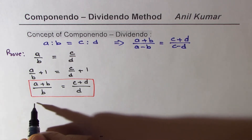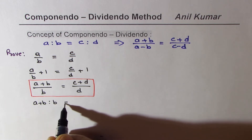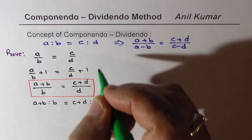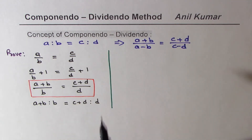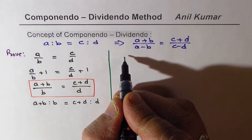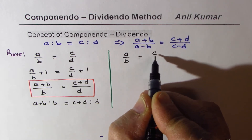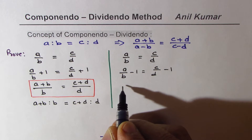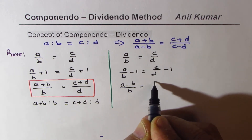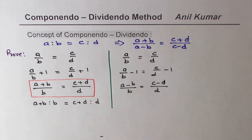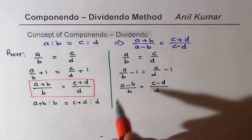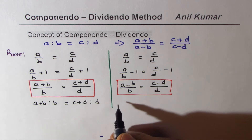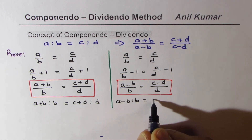That is to say, A plus B is to B is equal to C plus D is to D. So that is one rule which we have learned. Now let us see what happens when we subtract 1. If A over B equals to C over D, then subtracting 1 from both sides gives A minus B over B equals to C minus D over D. So A minus B is to B is also equal to C minus D is to D.